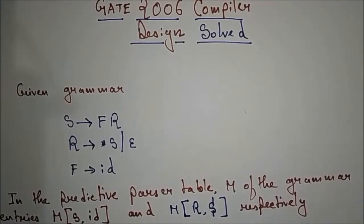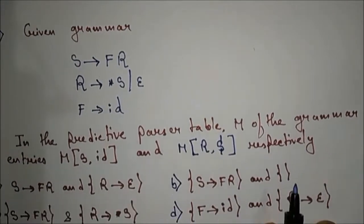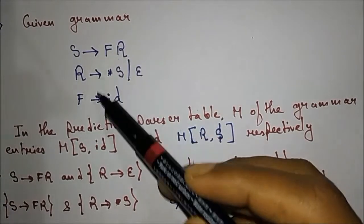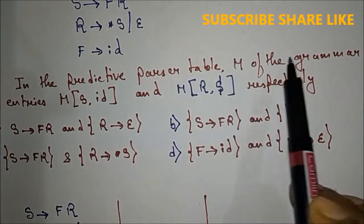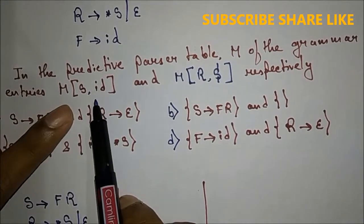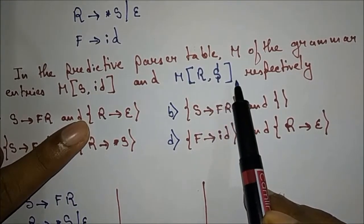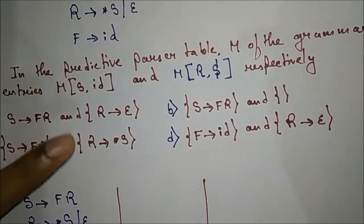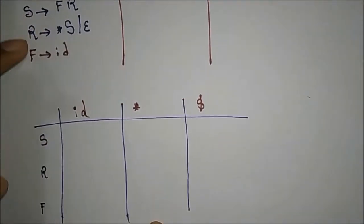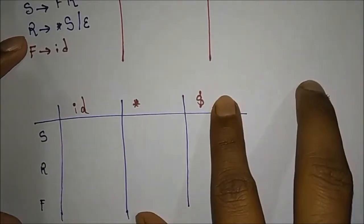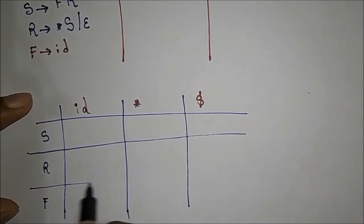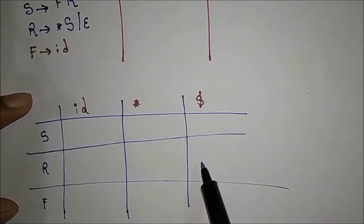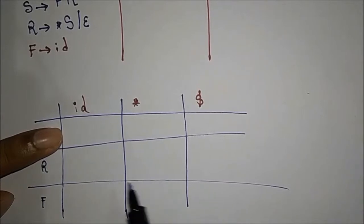Hello everyone, today we will see a GATE 2006 question asked in compiler design. They have given these three productions and they are saying in the predictive parsing table, M of S comma ID and M of R comma dollar respectively. In the parsing table, S comma ID and R comma dollar — which production will be placed in these two entries?